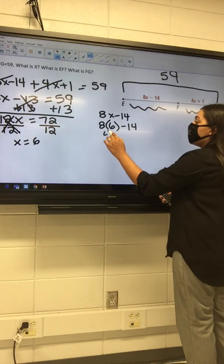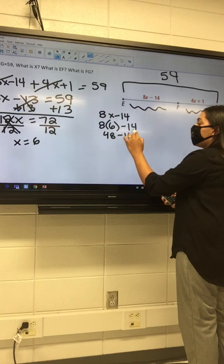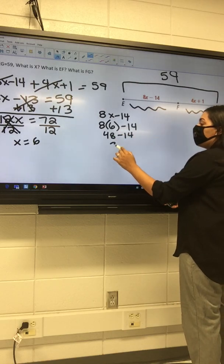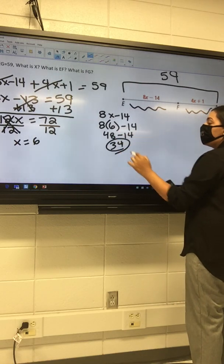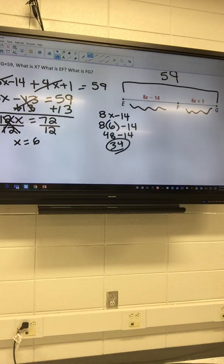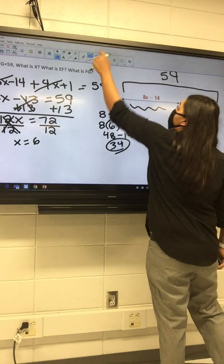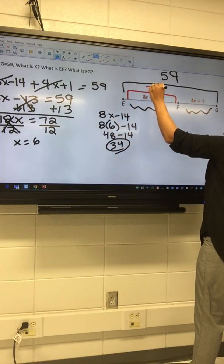Okay, so 8 times 6 is 48 minus 14. That's just gonna be 34. But what is 34? It's EF. So what that gave us was that this length of this segment EF is 34.